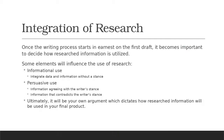Starting with integration of research: once the writing process starts in earnest on the first draft, it becomes important to decide how research information is utilized. There are a few elements that will influence your use of the research — one is whether it's for informational use, integrating data without a stance, or persuasive use, where information either agrees with or contradicts the writer's stance. If information agrees with you, you want it as support; if it contradicts you, you use it as part of your refutation.